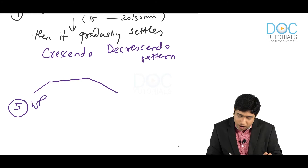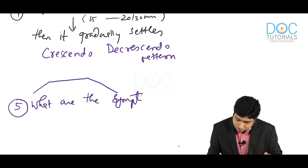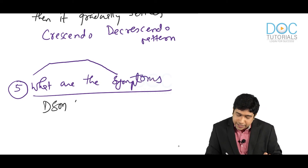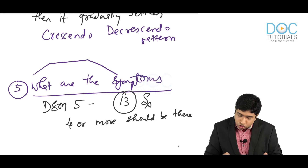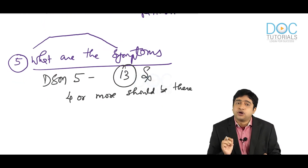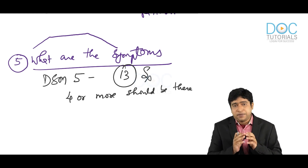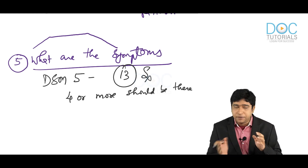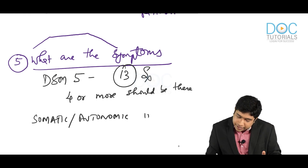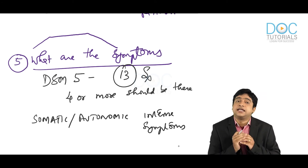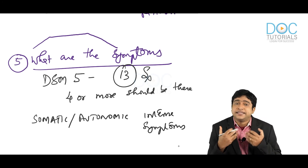DSM-5 has mentioned 13 symptoms, and they say that 4 or more should be present for a diagnosis. You need not remember them in chronological order, but you should have an idea. These are mainly somatic or autonomic intense symptoms.